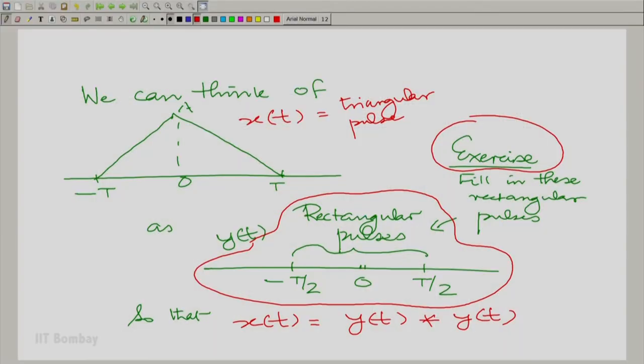If you carry out this exercise, you will realize that finding the Fourier transform of those rectangular pulses is not difficult at all. It is very easy to find the Fourier transform of the triangular pulse, because convolving a function with itself means multiplying the Fourier transform of that function with itself. So you find the Fourier transform of the pair of rectangular pulses and multiply it by itself to get the Fourier transform of the triangular pulse.